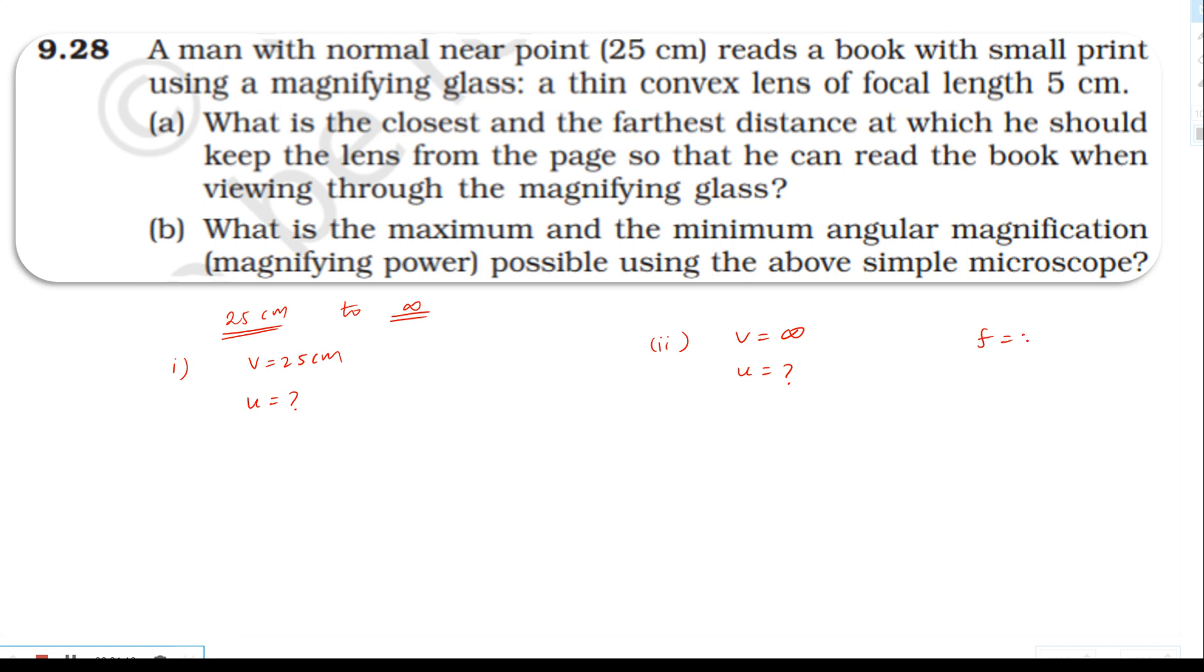The focal length is 5 cm. We're going to use the lens formula: one by f is equal to one by v minus one by u. This is equal to one by v minus one by u. Rearranging: one by u equals one by f minus one by v.